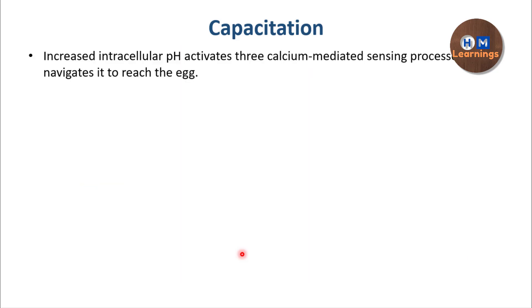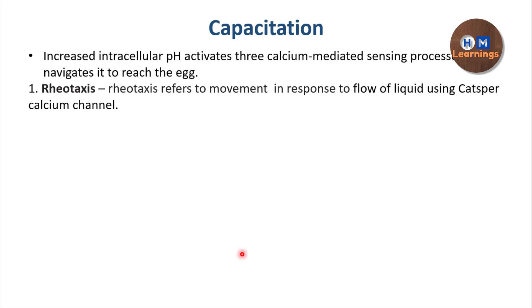The last part is how the capacitation process enables navigation. There are three processes: rheotaxis, thermotaxis, and chemotaxis. Bicarbonate influx raises the pH, and because of that rise in pH there is activation of calcium channels, which help the sperm perform rheotaxis. Rheotaxis means the sperm senses the direction in which the liquid is flowing — liquid flows from the oviduct, from the fallopian tube towards the uterus — so the sperm senses that direction and moves against it to reach the ovum.